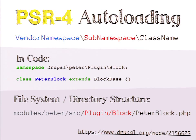For the plugin system, the part you need to know is really about the subnamespace. The format is: vendor namespace / subnamespace / classname. The subnamespace is important because depending on the type of plugin you're implementing, that will define what subnamespace to use. For blocks, you use the Plugin\Block subnamespace. Part of the reason for that is Drupal knows: any time I'm going to load a block plugin, I should look for classes in this subnamespace. Basically what it comes down to is a naming convention — based on the namespace you're using, this is where you should put the code for that particular PHP class.